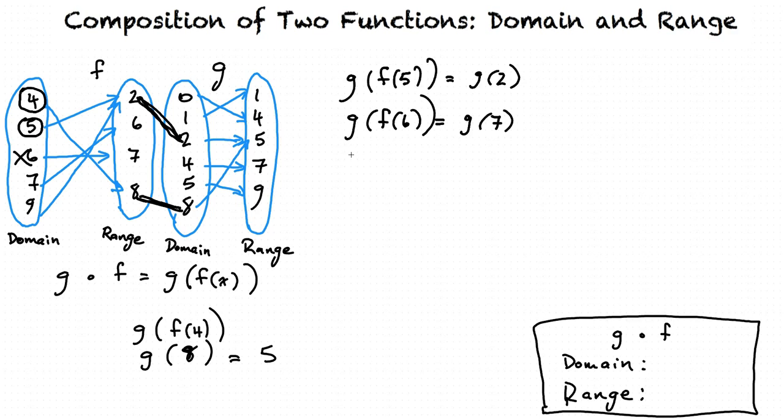If we try g of f of 7, we see that f of 7 equals 6, so we need to find g of 6. We can see here again that there is no 6 in the domain of g. So we're also stuck here, which means that 7 is not in the final domain.